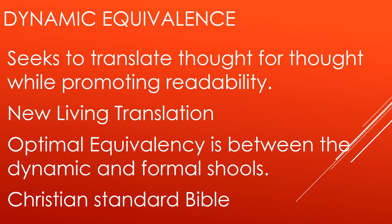There's also something called optimal equivalency, which sits between dynamic and formal equivalence — a relatively new approach. This is the philosophy followed in the Holman Christian Standard Bible and now the Christian Standard Bible. They're trying to hit the perfect middle ground between thought-for-thought readability and the precision of formal equivalence. In the introduction to the Christian Standard Bible, they explain that some passages are handled thought for thought for readability, while others go word for word when that works just as well. They're trying to get the best of both worlds.